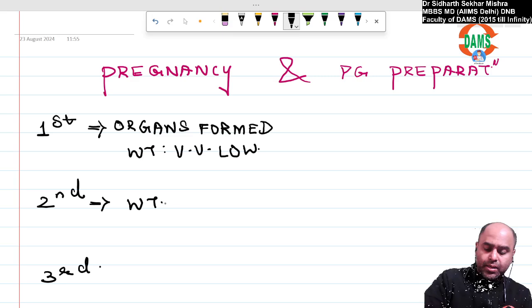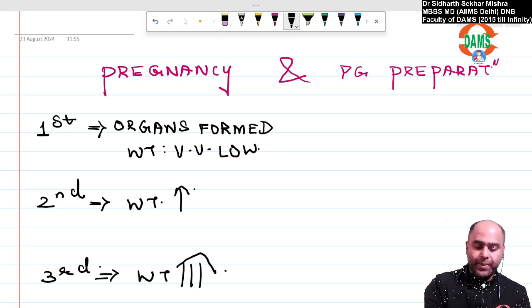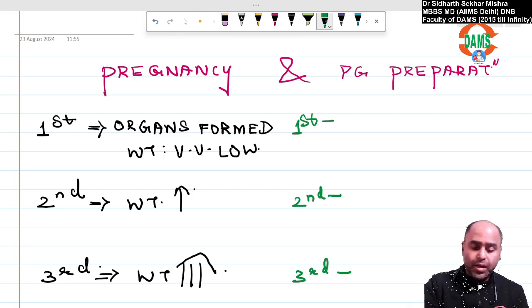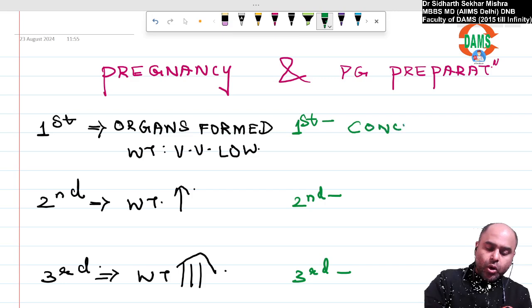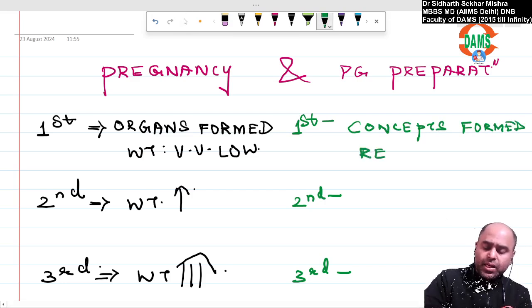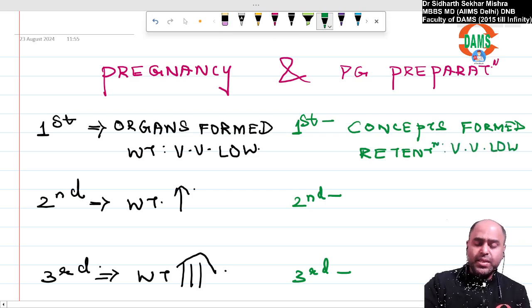In the second trimester the weight increases, and in the final trimester the weight goes up massively. Similarly, when we talk about PG preparation, it is always advisable to go for three divisions. In the first revision, the concepts are formed, whereas the retention is very, very low. In the second, the retention goes up.